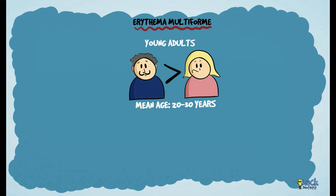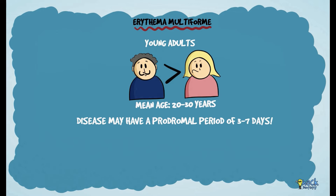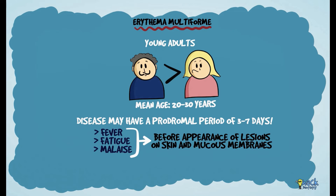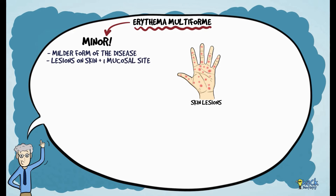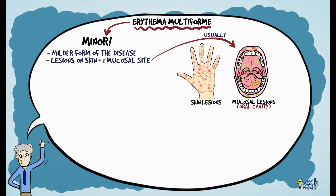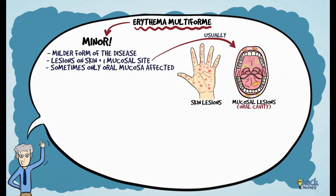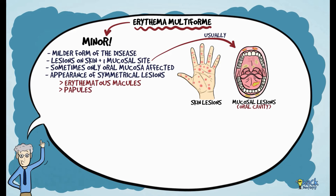Erythema multiforme commonly occurs in young adults, usually within 20 to 30 years of age, predominantly in males. The disease may have a 3 to 7 day prodromal period of fever, fatigue, and malaise before the appearance of lesions. Erythema multiforme minor is the milder form, characterized by skin lesions with involvement of only one mucosal site — predominantly the oral mucous membrane. Skin lesions are characterized by symmetric erythematous macules, papules, or sometimes blisters, predominantly on the arms and legs.